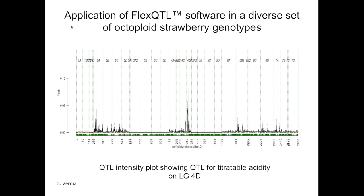So then we move on to actual QTL analysis. We have 260 pedigree-linked materials that were part of the Rosebreed germplasm—very diverse but pedigree-linked, spanning multiple breeding programs and multiple generations. An initial QTL analysis was done using the 6,600 initially mapped SNPs for which we have mapped locations. Here's an example for titratable acidity, and you can see a significant QTL for titratable acidity on linkage group 4D. This particular QTL explains approximately 10% of the phenotypic variance among that diverse set of germplasm.